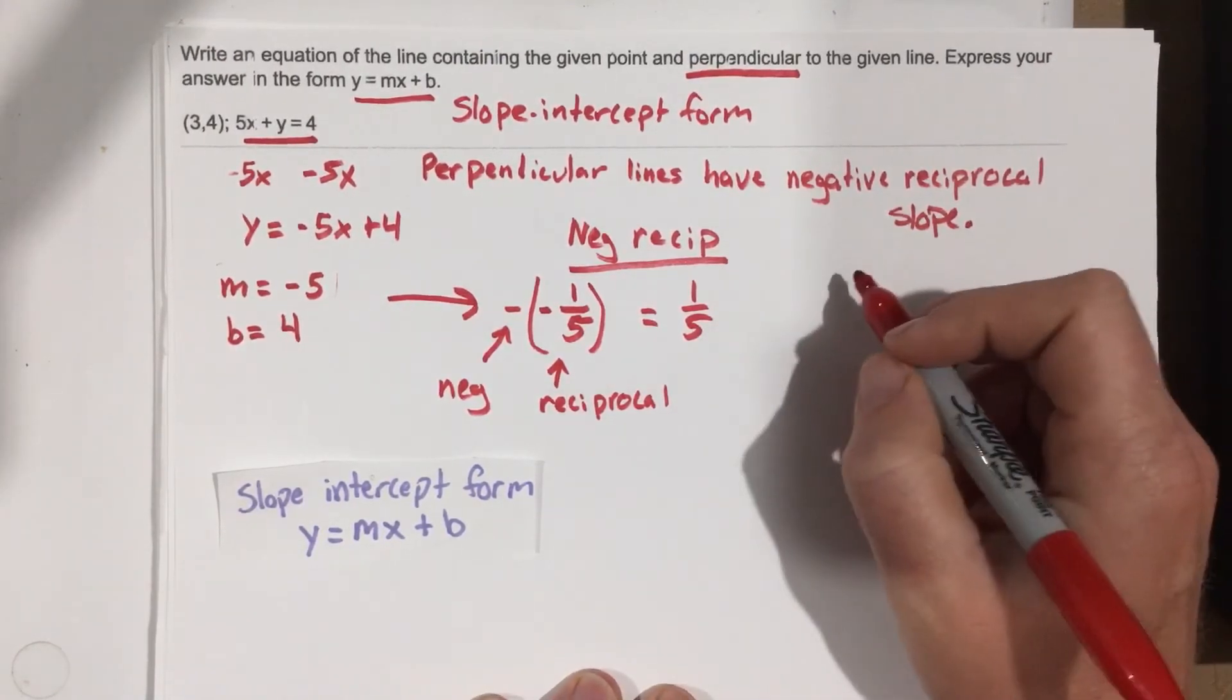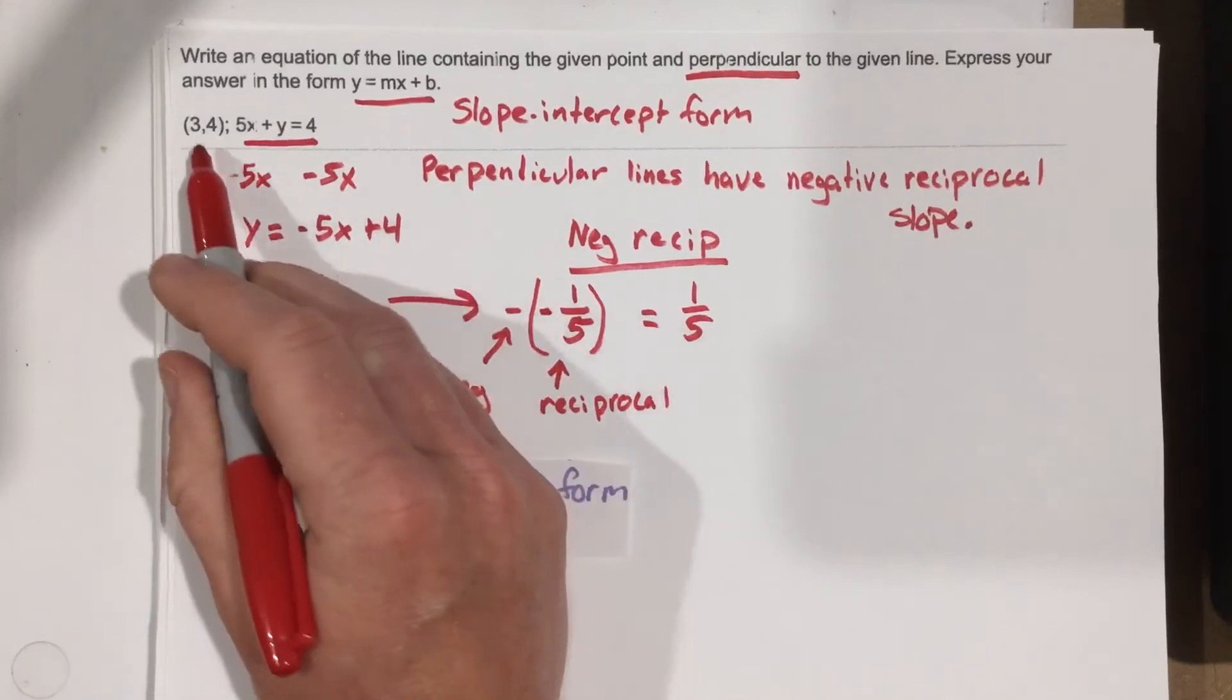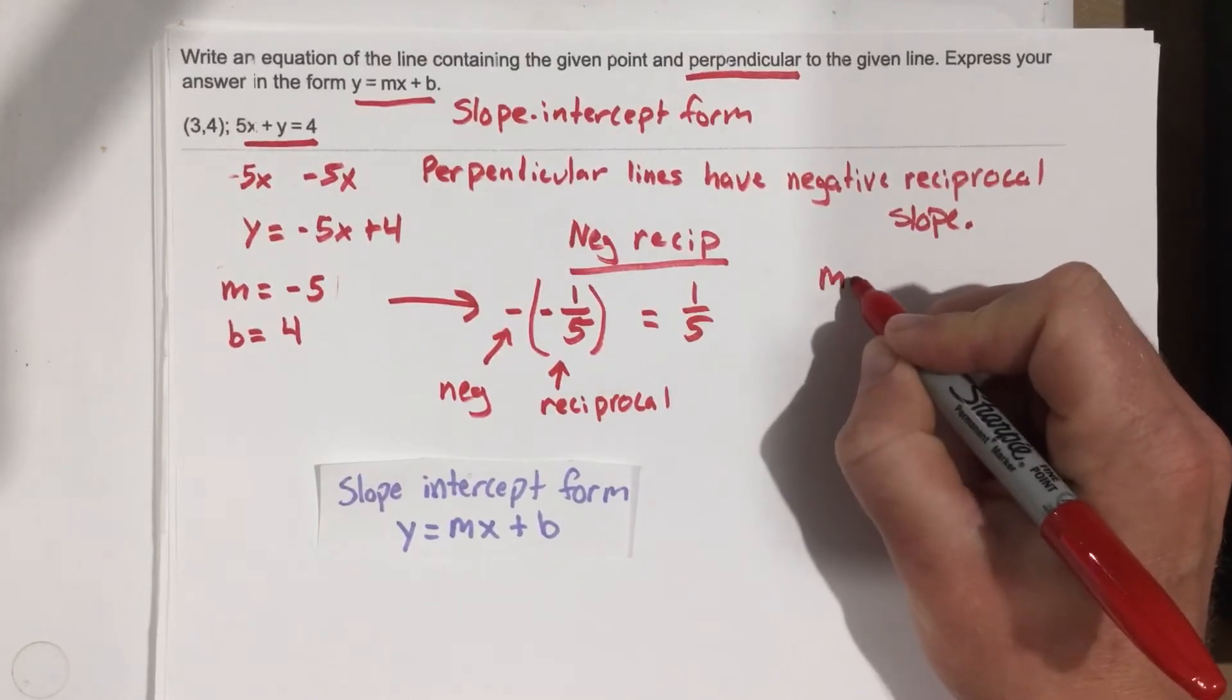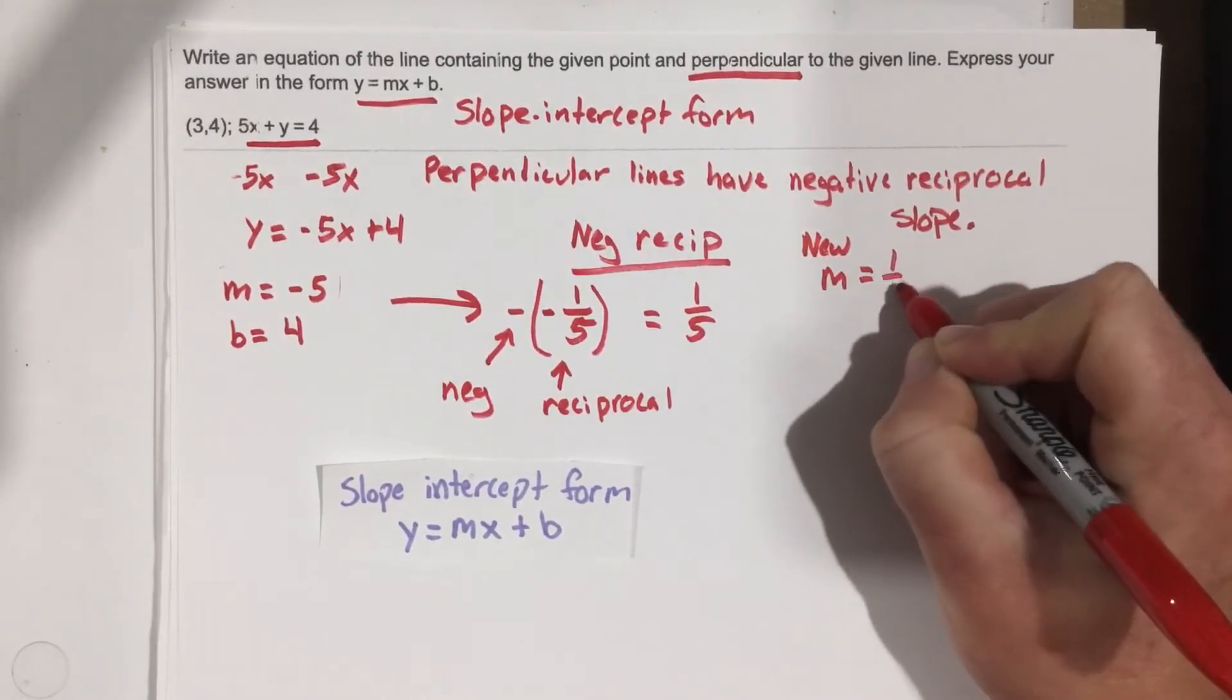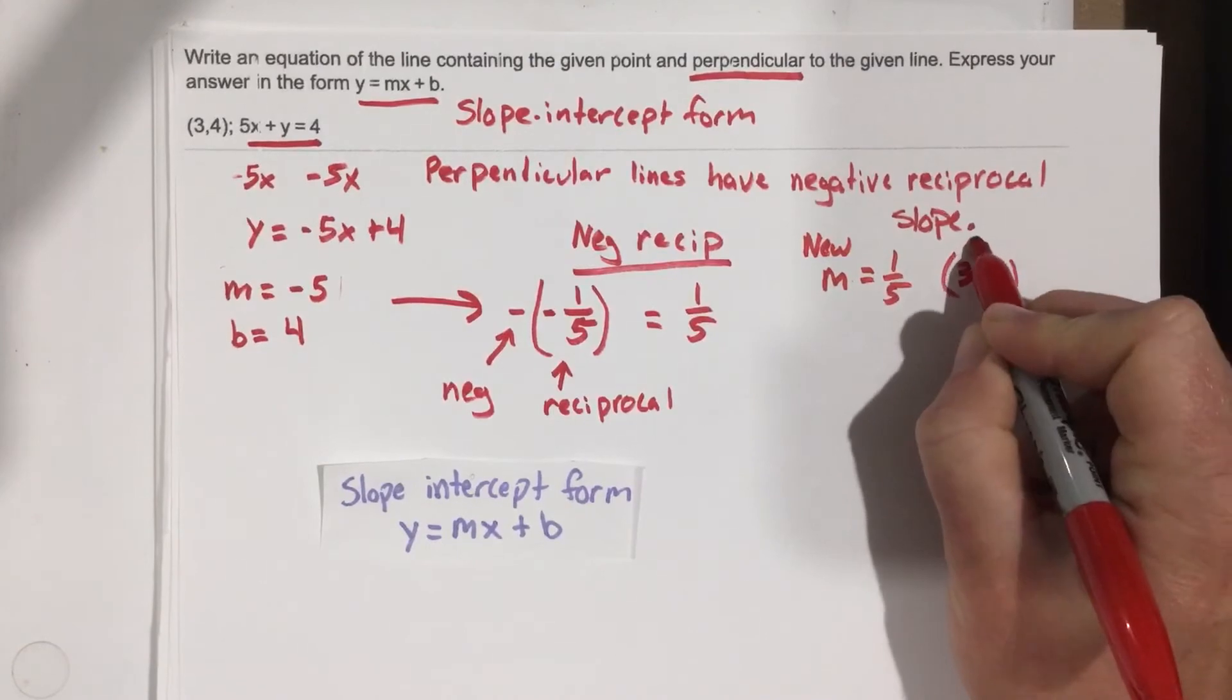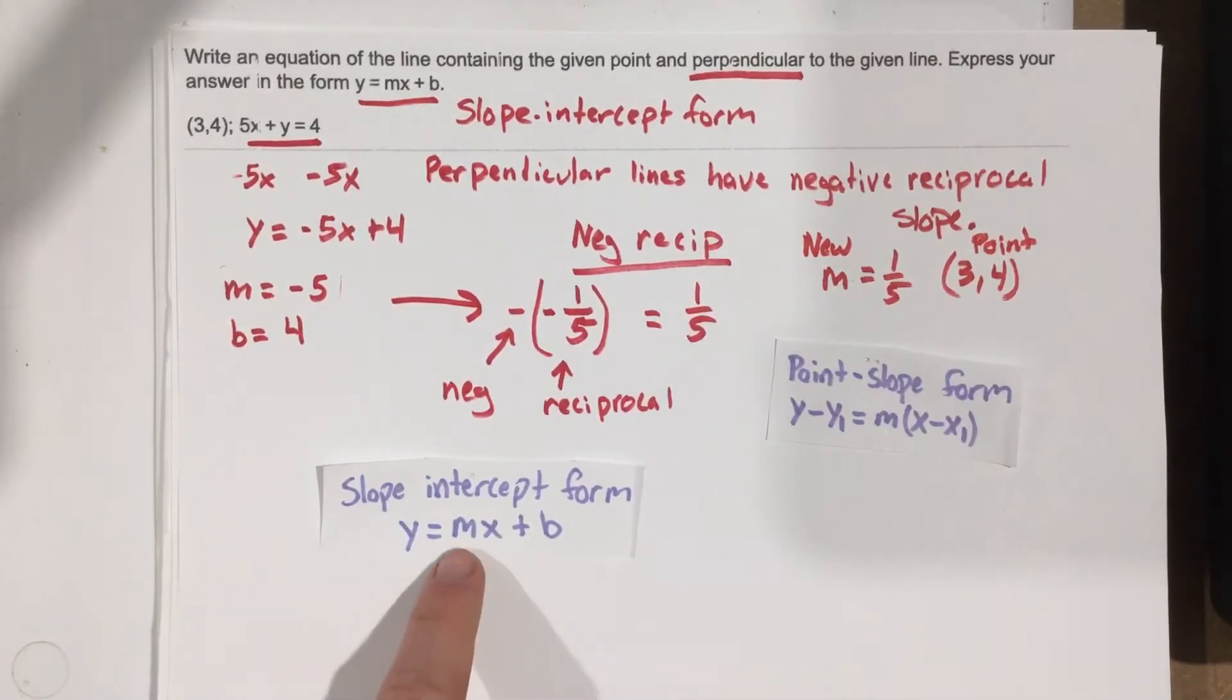So I can go ahead and use point-slope form to do this. Because I have a point, 3, 4, and I have a slope, my new slope is 1 fifth, and my coordinate is 3, 4. So this is my point. I'm probably going to use point-slope form and rewrite it. So this is x1, this is y1.